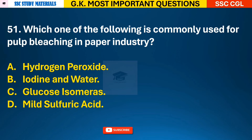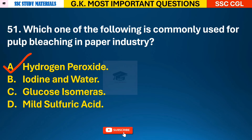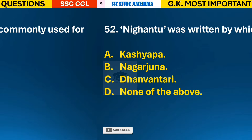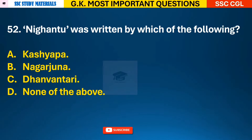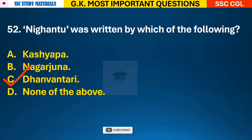Question 51: Which one of the following is commonly used for pulp bleaching in the paper industry? Answer A - hydrogen peroxide. Question 52: Nighantu was written by which of the following? Answer C - it was written by Dhanvantari.